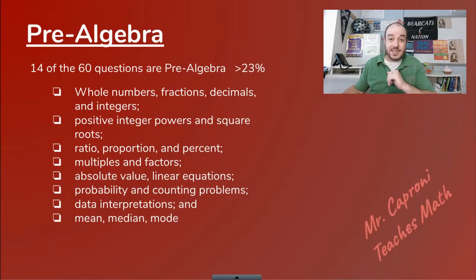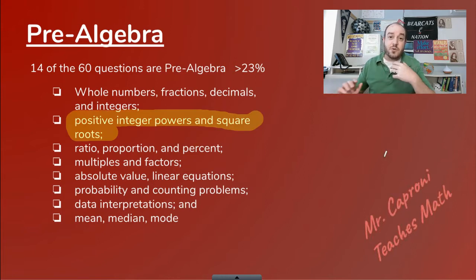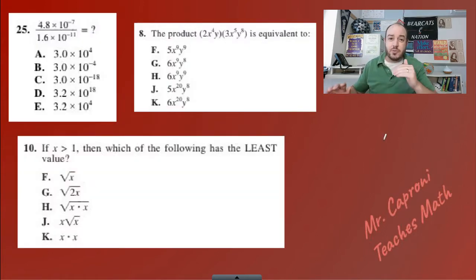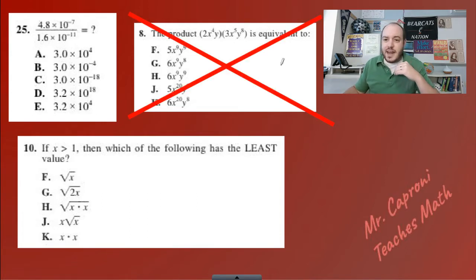So we are still in the pre-algebra section of the ACT. Remember, if you want to see all of the sections, you can check out my other video that covers all the different topics, which I'll link at the top. But for today, we are jumping into the second bullet point, which is positive integer powers and square roots. Now again, we're going to be covering the basics of this because you'll see these topics pop up again and again in the other algebra sections. Looking at example problems for this can be a little bit tricky since a lot of them aren't covering just the basics of these concepts, but are looking at much further down the road.